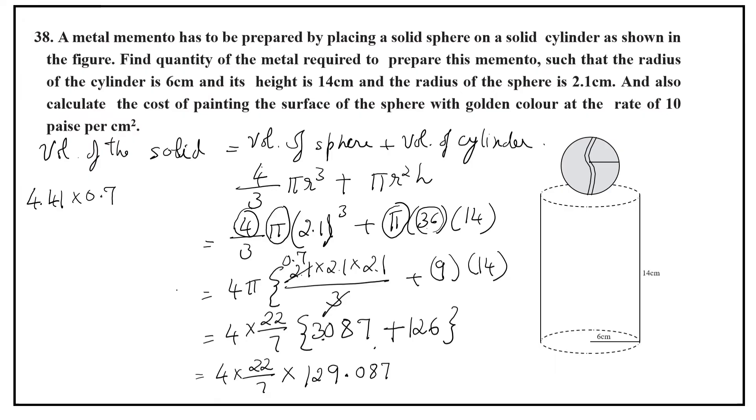Now cancel it with 7. 7 1s are 7, carry 5, 59. 7 8s are 56, 3, 30. 4s are 28, carry 2, 28. So we have to multiply 4 into 22 into 18.441. Let us do rough work once again. Into 4 into 22, 7 has been cancelled. 4 into 22, 88.